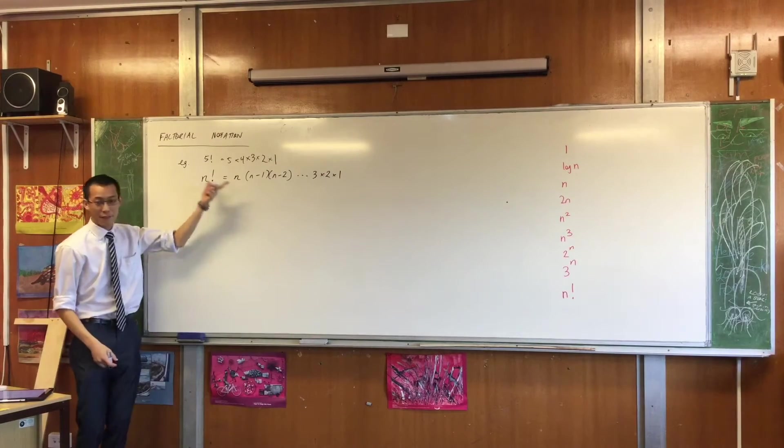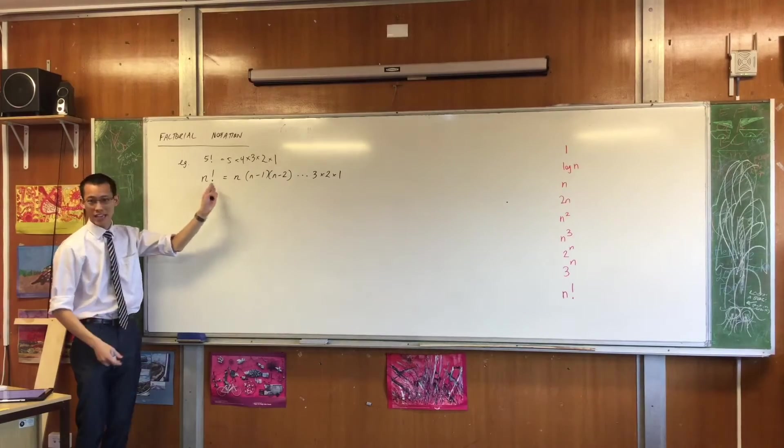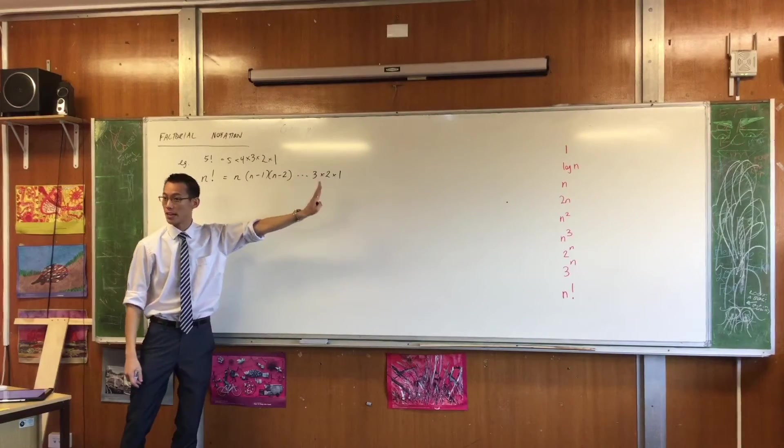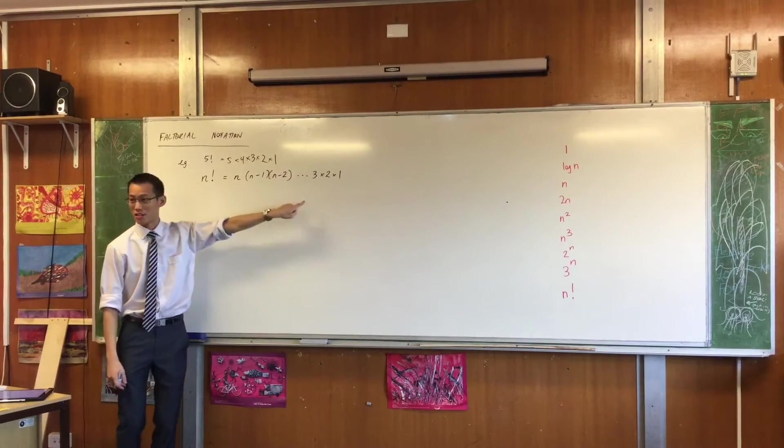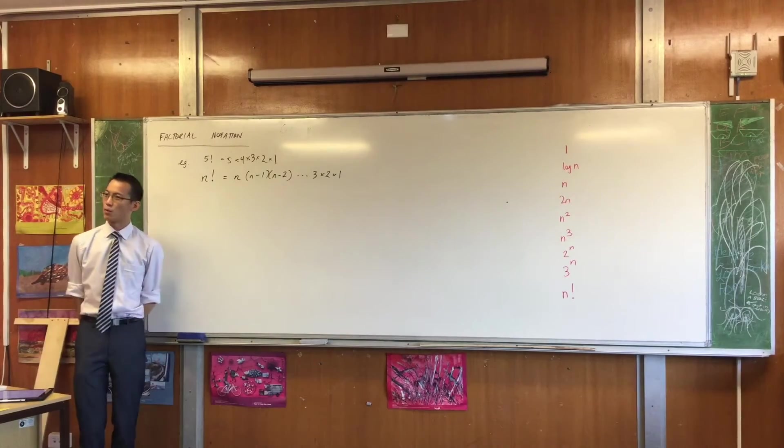So this is our definition for n factorial, it's n times all of the numbers underneath it, all the whole numbers I should say. And then you just find out what that product is.